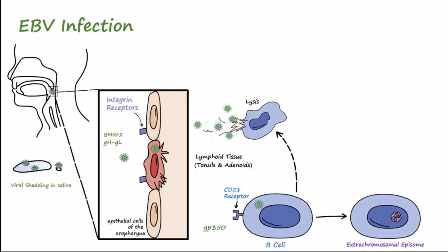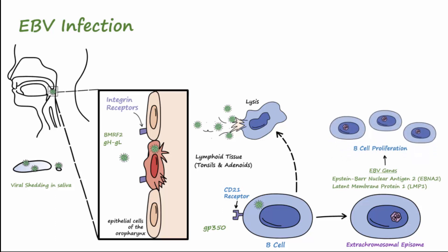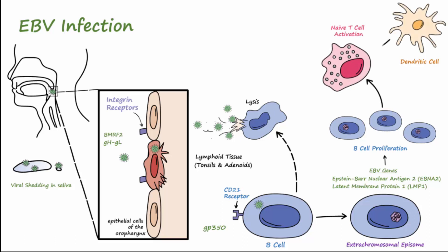When this happens, EBV will replicate its double-stranded DNA genome using cellular DNA polymerases and the expression of the EBV genes, Epstein-Barr nuclear antigen 2, and latent membrane protein 1 to activate the B cell to grow and proliferate. This ensures that there is a large number of B cells that contain the viral genome. Infected B cells prime naive T cells, and note that dendritic cells can prime naive T cells as well. When this occurs with B cells, they become latent and the activated T cells proliferate.